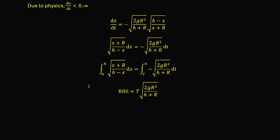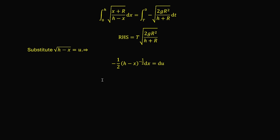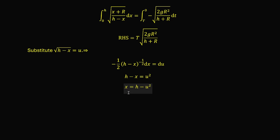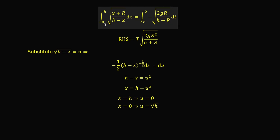For the left-hand side integral, we first use a u-substitution: let u equal the square root of (h − x). Taking differentials gives minus one-half of (h − x)^(−1/2) dx = du. This brings the denominator and dx together into a multiple of du. Under this substitution, x is just h − u². For the new integration limits: when x = h, u = 0; and when x = 0, u = √h. So the new lower limit is √h and the new upper limit is 0.